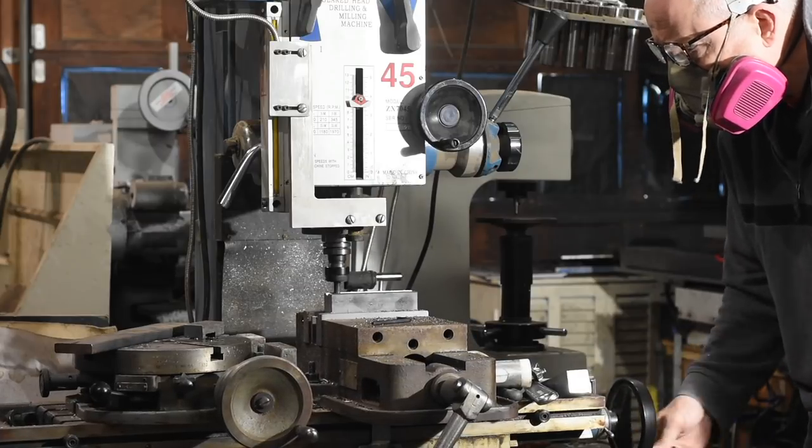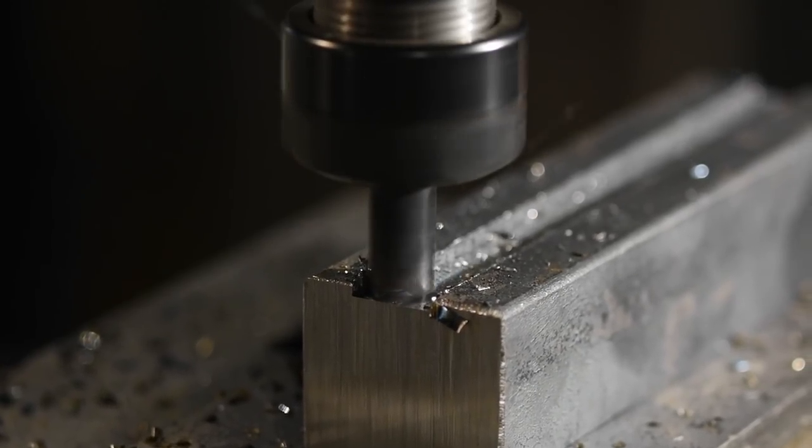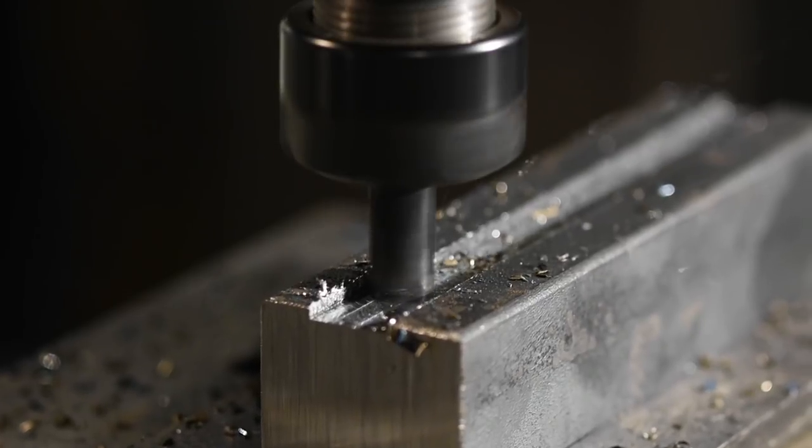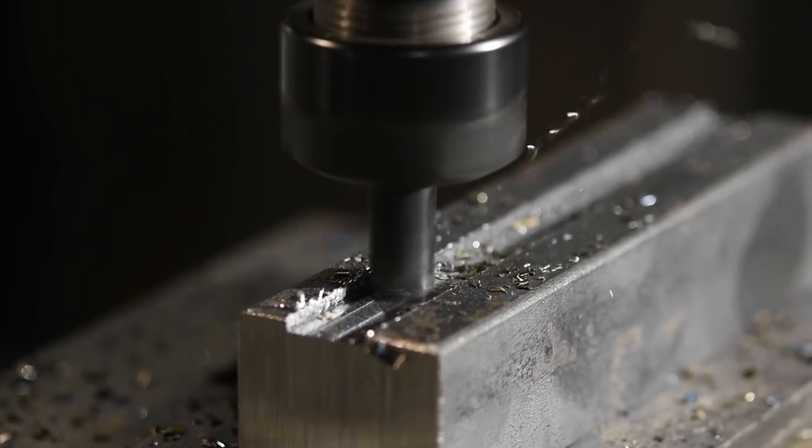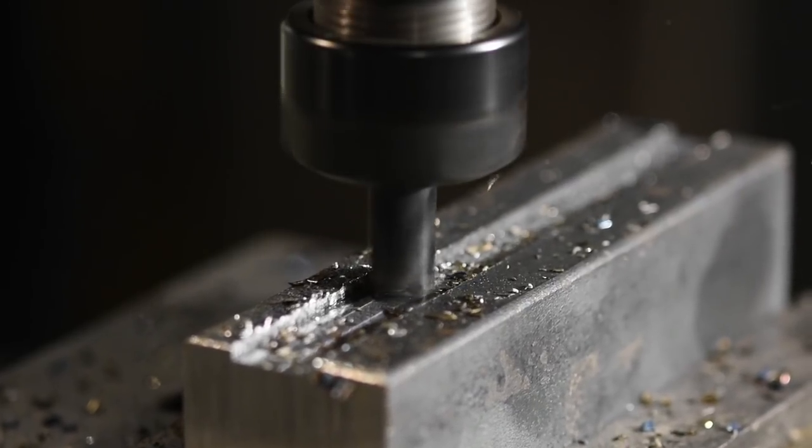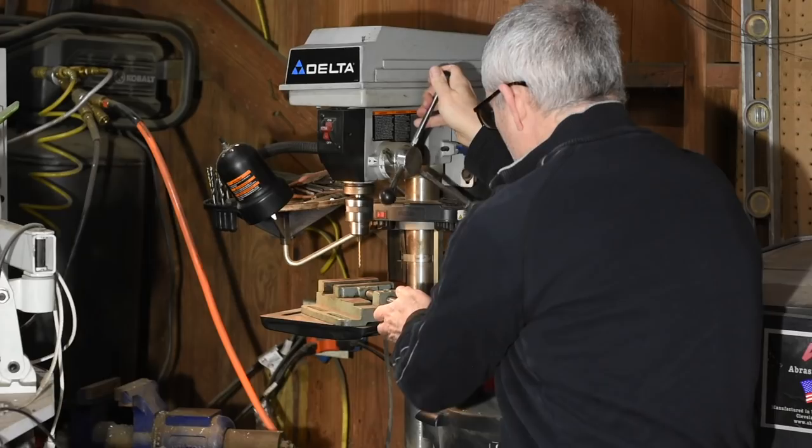First, collets can be made to run more accurately. Every tool that rotates wobbles at least a tiny bit. This wobble is known as run-out. A typical Jacobs-type key drill chuck has run-out in the 4,000th of an inch range. Collets of various sorts can shave that down to 1 thou or even significantly less.